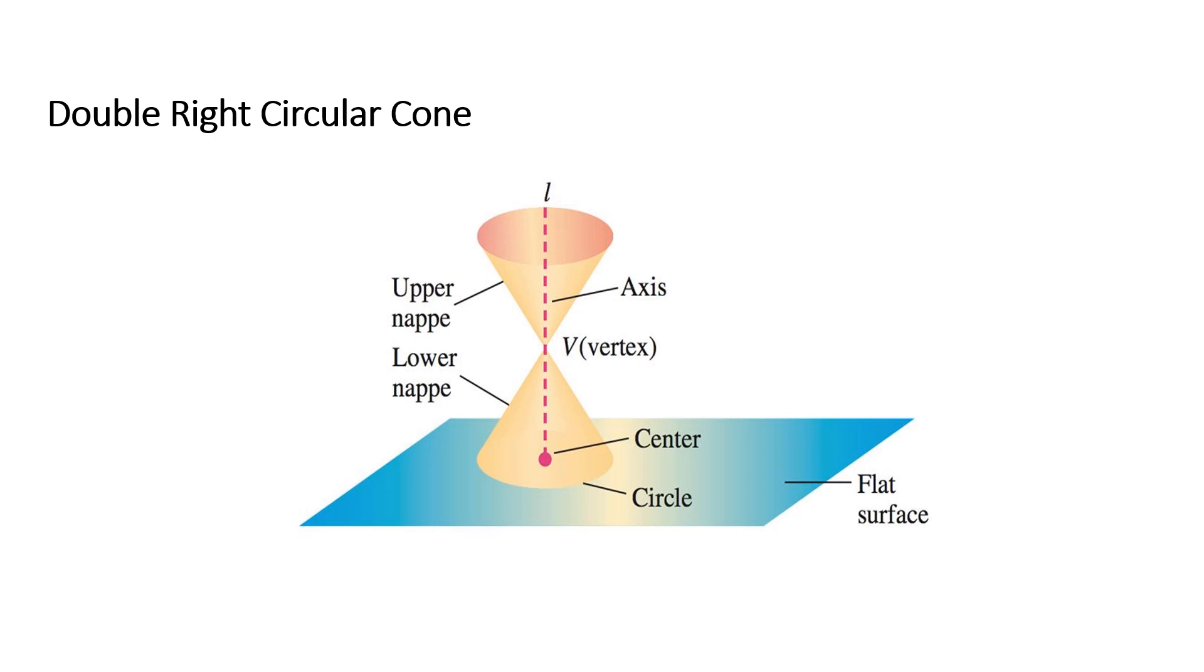First, let me show you this double right circular cone and a plane. A double right circular cone is a geometric figure made up of two right circular cones placed apex to apex as shown. Typically, a double cone is considered to extend infinitely far in both directions.